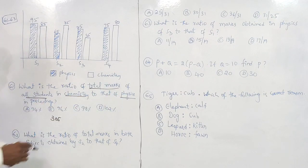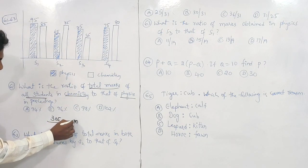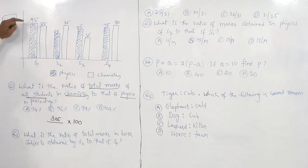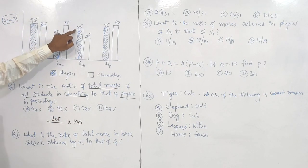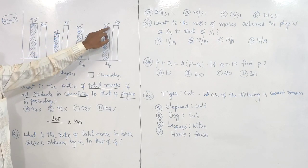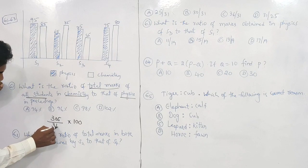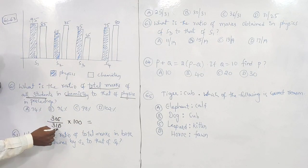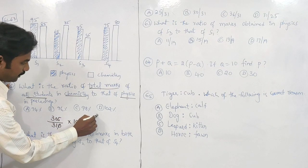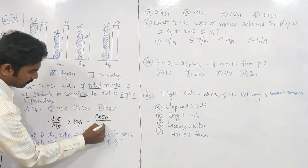Ratio of chemistry to physics, multiplied by 100 to get percentage. Physics total: 95 + 100 + 160 + 70 = 310. So we need (305 / 310) × 100 = 3050 / 31. Options are all above 90, so checking with 9: 9 × 31 = 279, remainder 26; then 8 × 31 = 248, remainder 12 — approximately 98%. The answer is 98%.